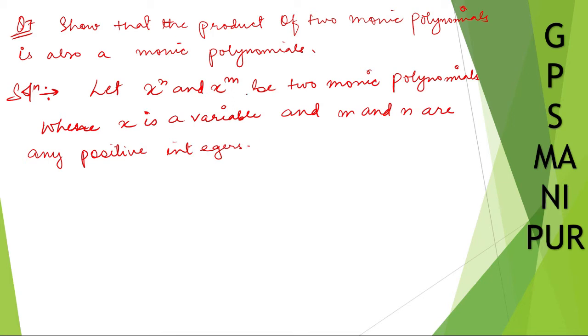Okay, now the question is asking us that the product of two monic polynomials, so we have taken x to the power n and x to the power m as two monic polynomials. So now let us find, therefore: